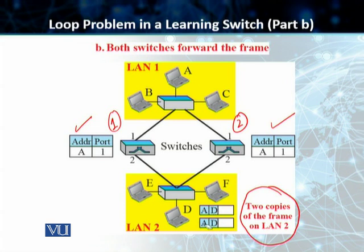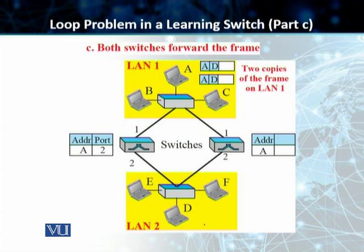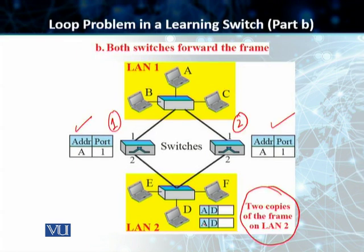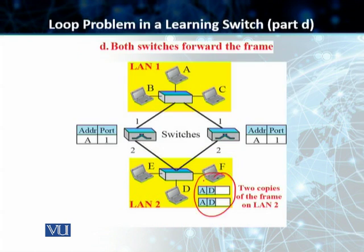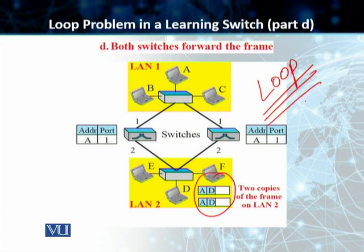What happens is both copies continue to be forwarded — the frame is sent again to LAN two by both switches, creating two copies on LAN two, and this process carries on indefinitely. We have essentially created a never-ending loop that is due to the learning process used by these switches.